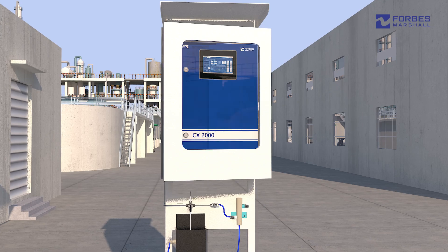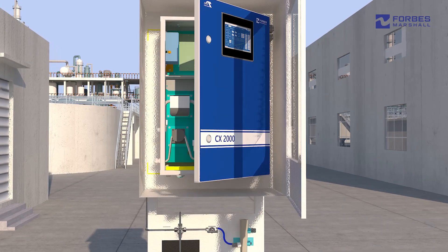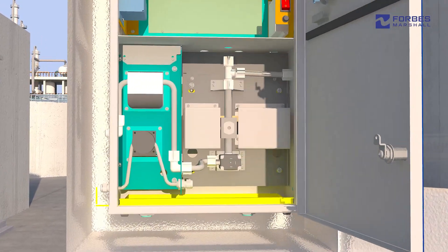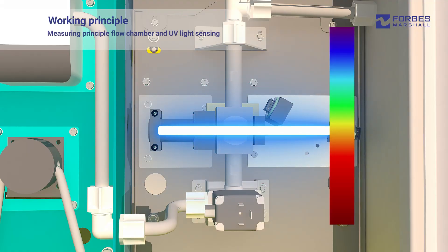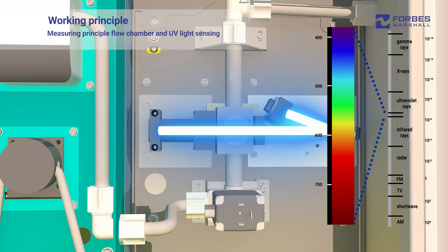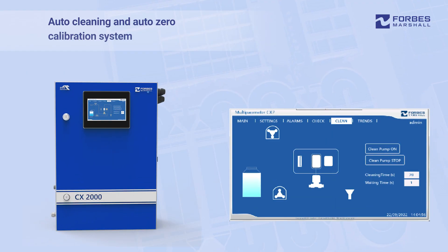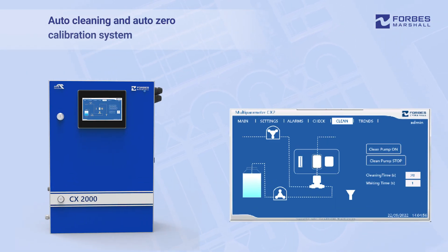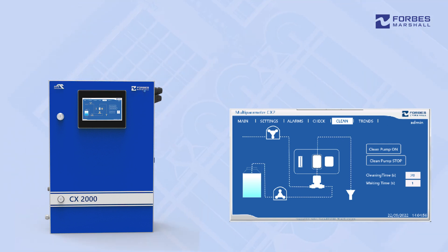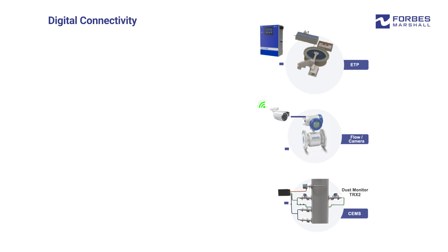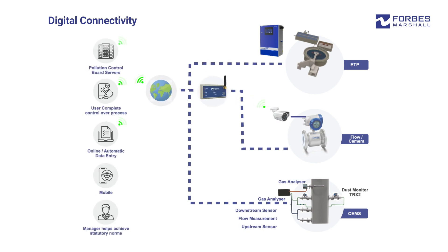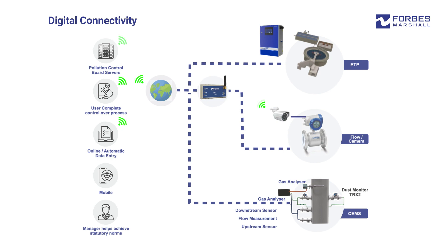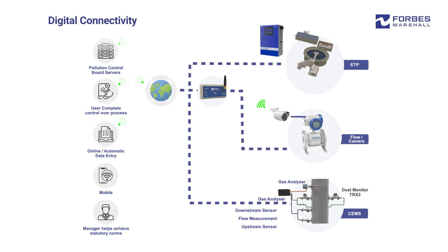The measuring principle of the CX2000 is based on UV visible light absorption dual beam spectroscopy. The auto-cleaning feature ensures flow cell cleaning and zero drift correction. Through remote real-time monitoring, diagnostics are provided to help users plan corrective actions where required and ensure high uptime of the analyzer.